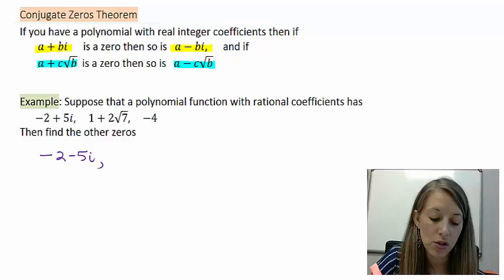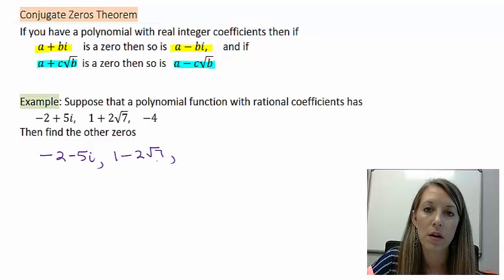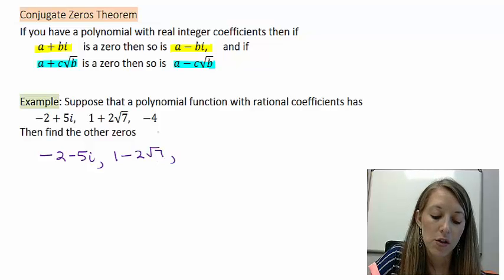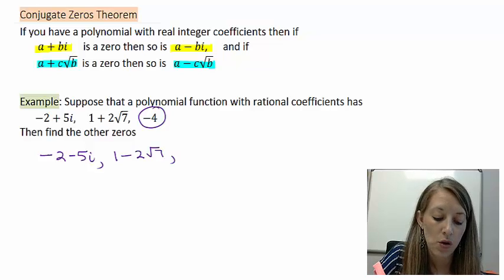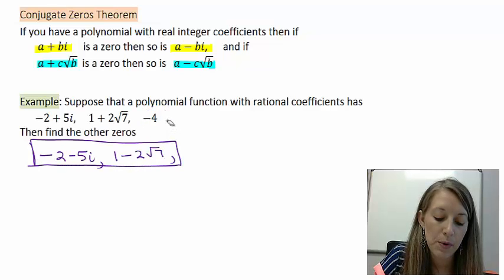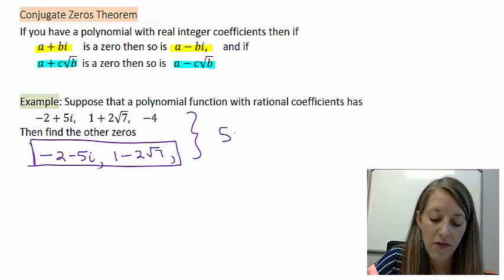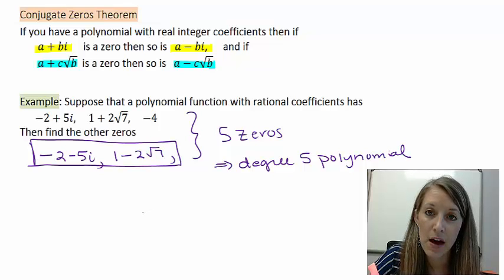If I have 1 plus 2 square root 7, then I must have 1 minus 2 square root 7 as well. But only the roots and only the imaginary numbers come in conjugates. If we have the zero of negative 4, that doesn't mean that it comes with a partner as well. So the other two zeros are just these two zeros here. In this polynomial total, we have five zeros, and that means it is going to be a degree 5 polynomial. If we were to multiply all of this out, we would have something ending up with x to the fifth power.